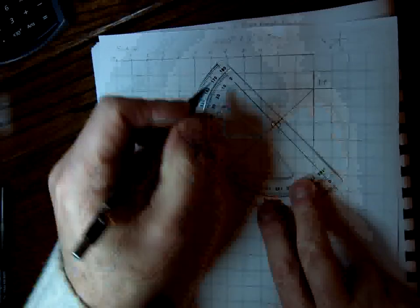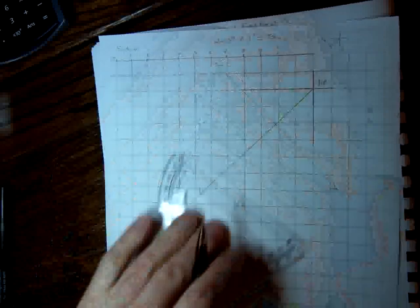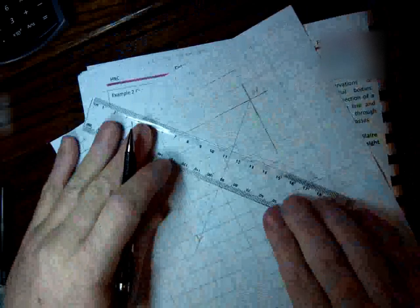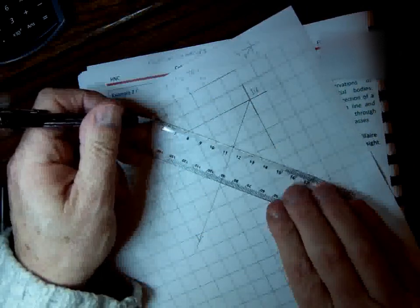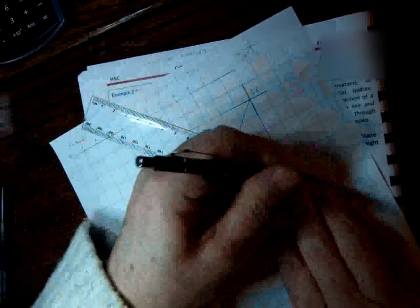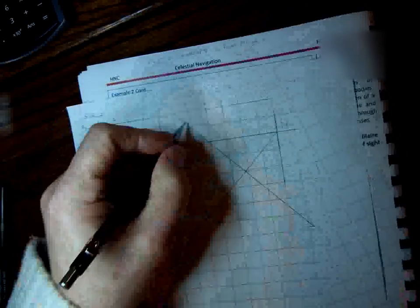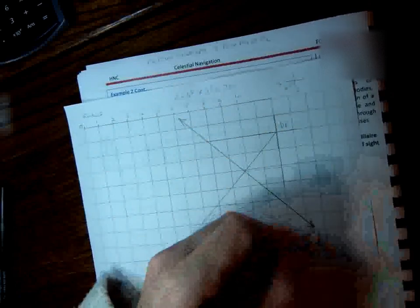I'd mark off either side. I'd get my ruler, and then I would draw the position line, which is 90 degrees to the intercept. And there we have our position line, and that's there. That's the position line, which is 90 degrees to the bearing.